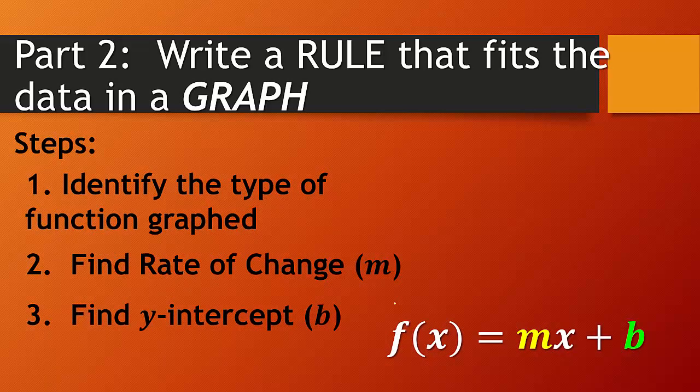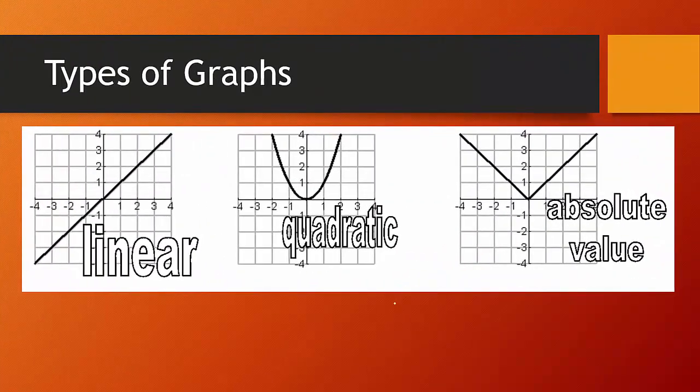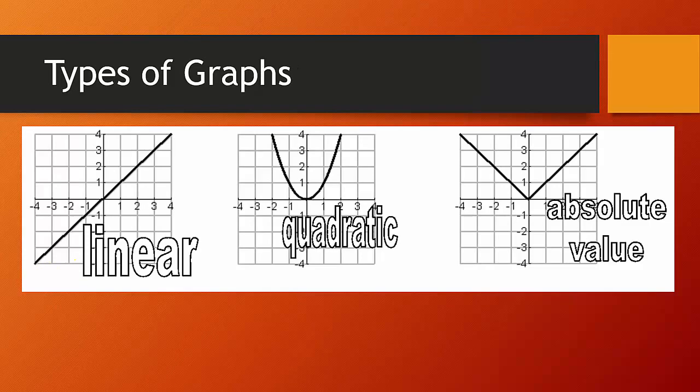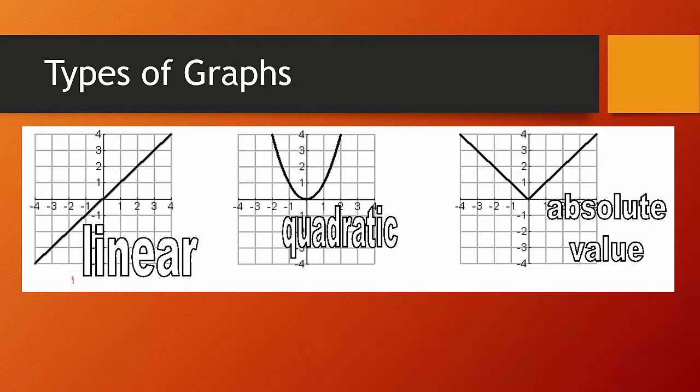So initially, you're really only going to see two types. But I'm going to show you the three primary types, which is linear. Linear, which, of course, linear means if you take part of that word, is a line. So that's a nice line right there. Quadratic, that's got a u-shape to it. So u-shaped. Absolute value, v-shaped.